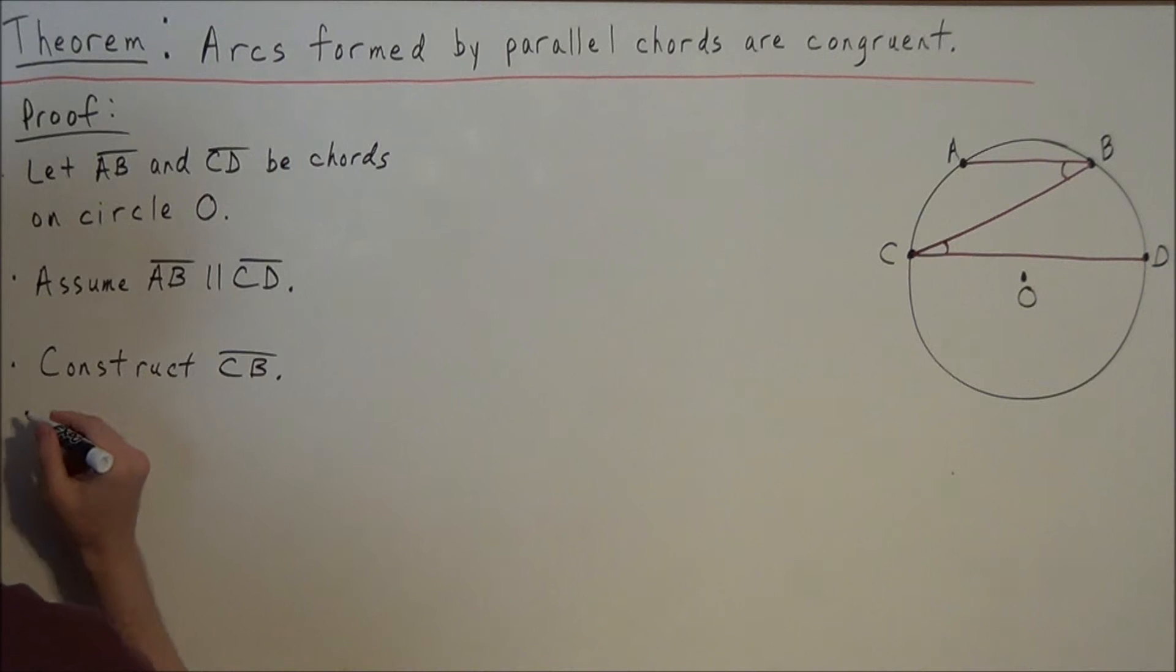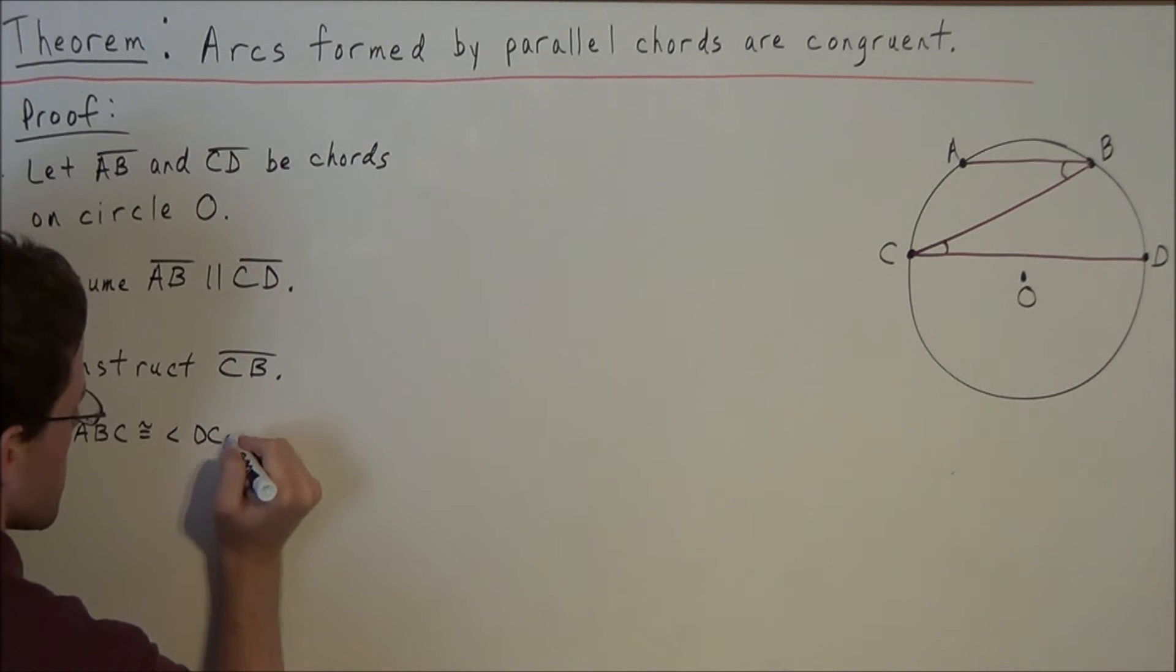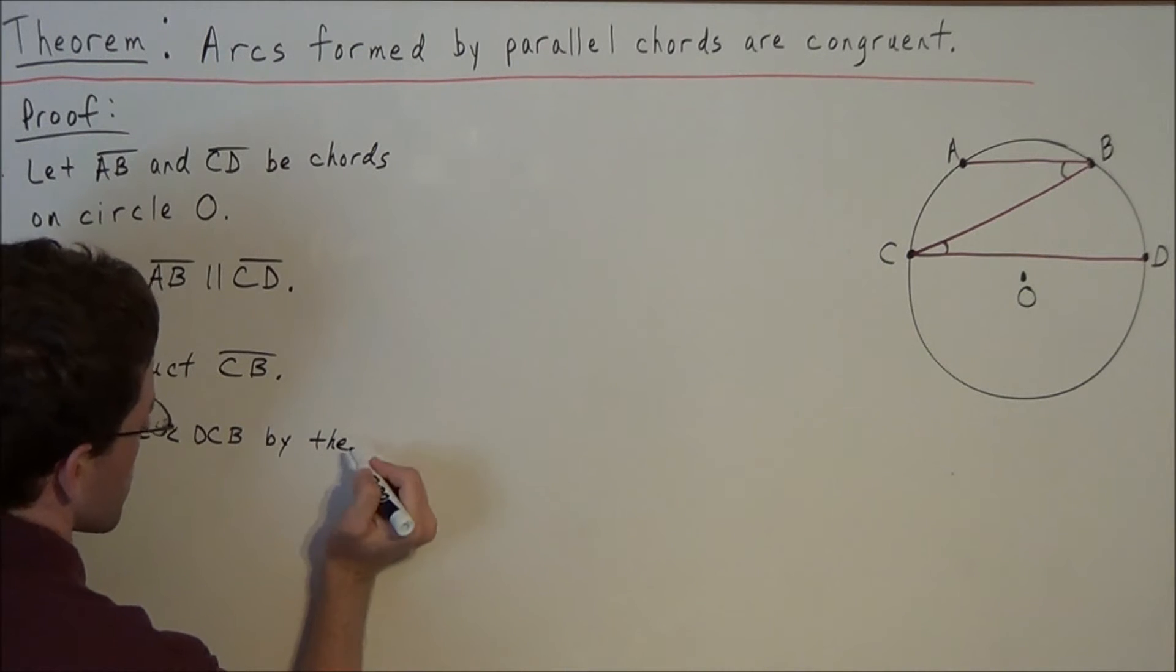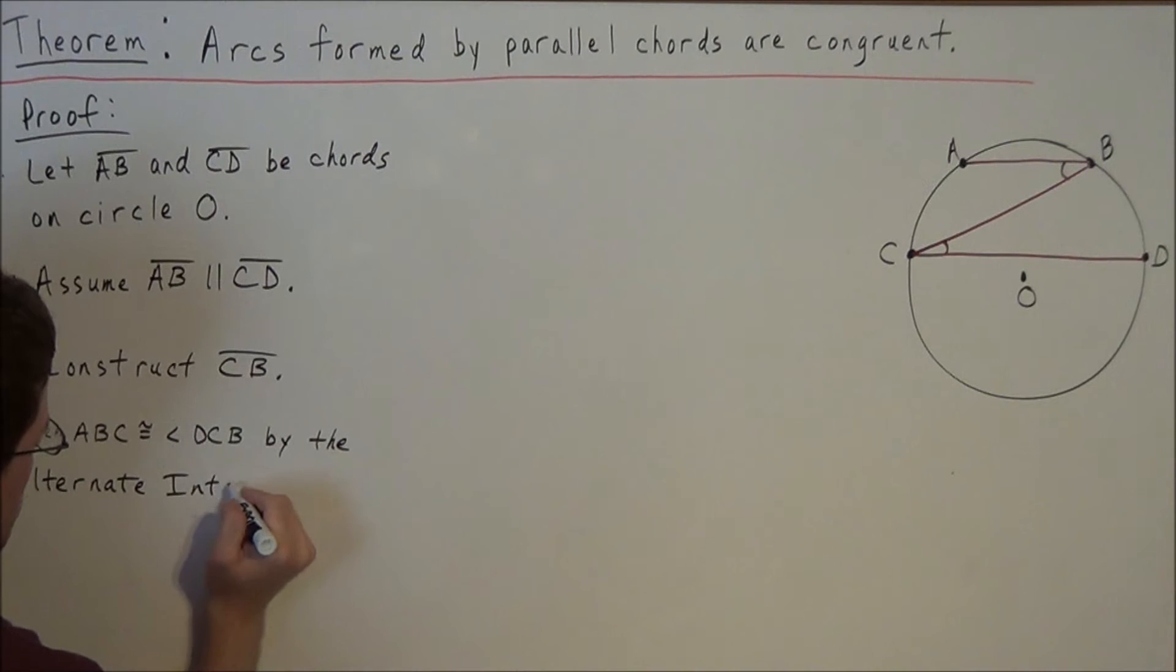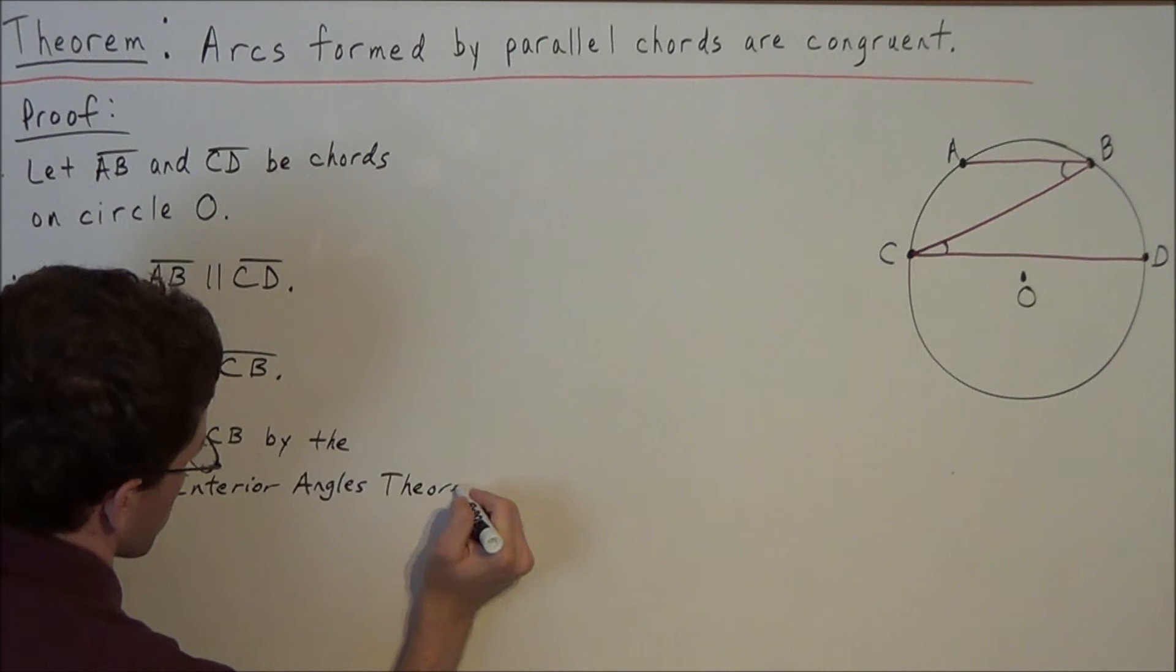So that was the purpose of constructing this new line segment here. So for the next line, we could say angle ABC is congruent to angle DCB. And now this is true by the Alternate Interior Angles Theorem.